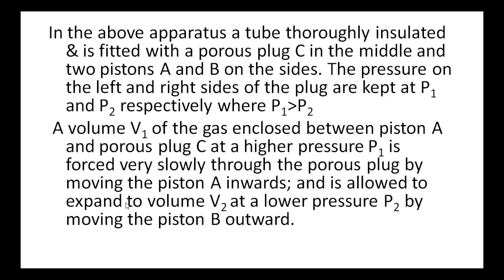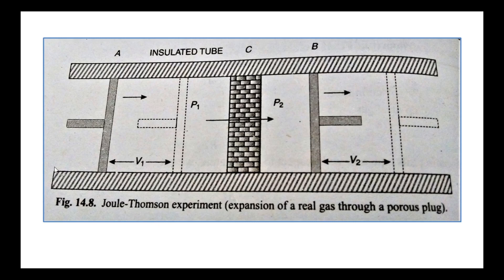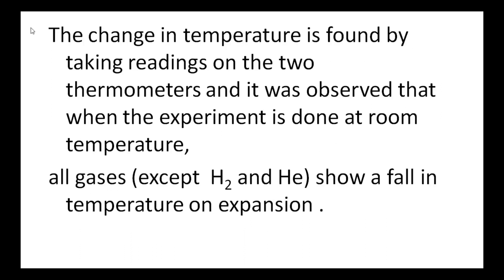The gas is allowed to expand to volume V2 at the lower pressure P2 by moving the piston B outward. That is, in this diagram, piston A is slowly moved inward such that the pressure does not change. Then what happens is the gas molecules pass through the porous plug into the compartment B. Then there is an expansion of gas. Gas molecules move apart and expansion takes place, hence volume increases to V2. Then the second piston B is moved outward. So there is a change in temperature found by taking readings on the two thermometers.